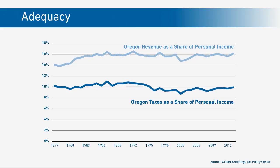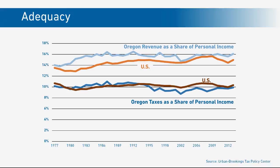In essence, what's going on in state and local government, Oregonians are spending about 16 cents on the dollar for state and local services. How does that compare to the United States average? In 2013, with respect to taxes, we're very close to the U.S. average as a share of our total personal income. On revenue, we're a little bit higher.